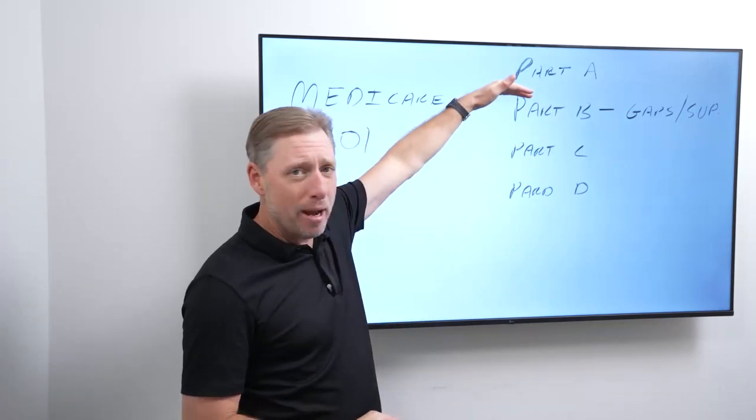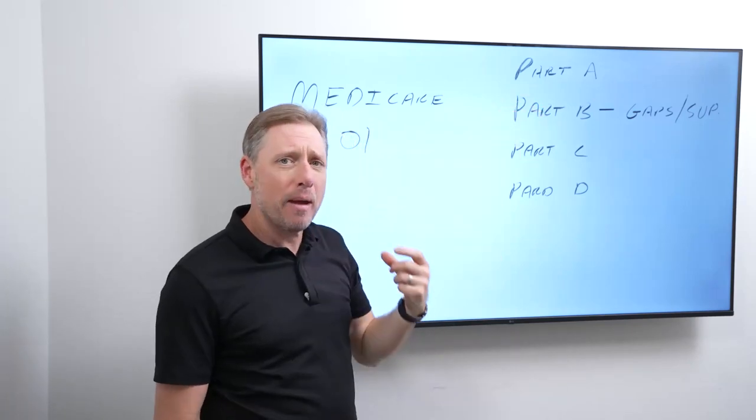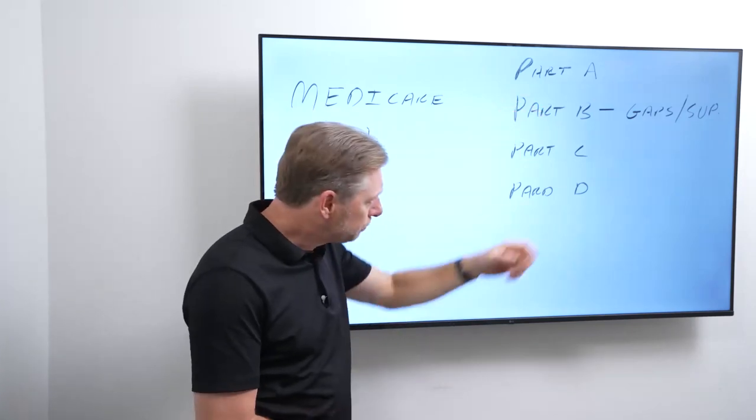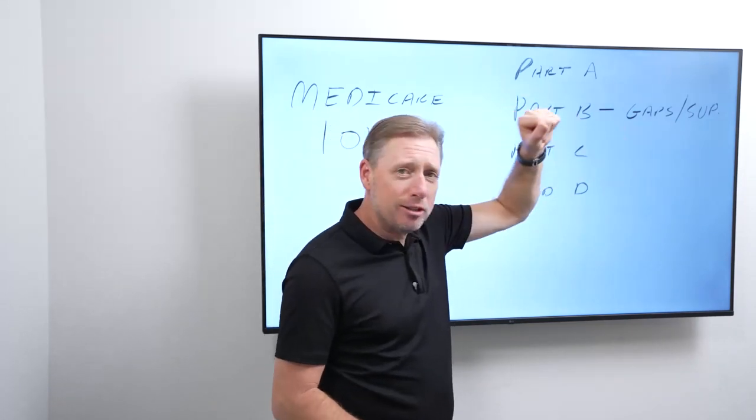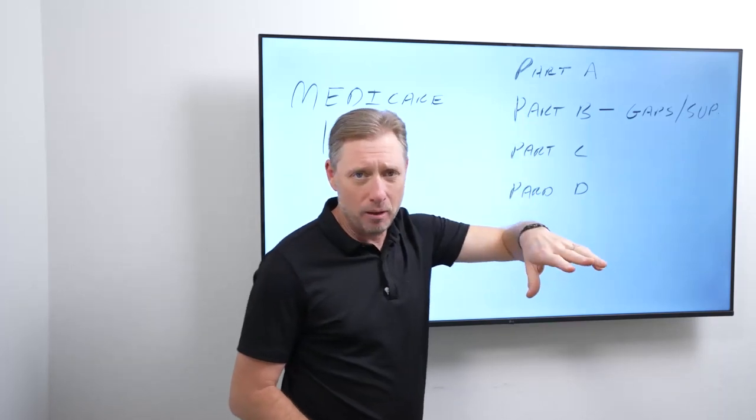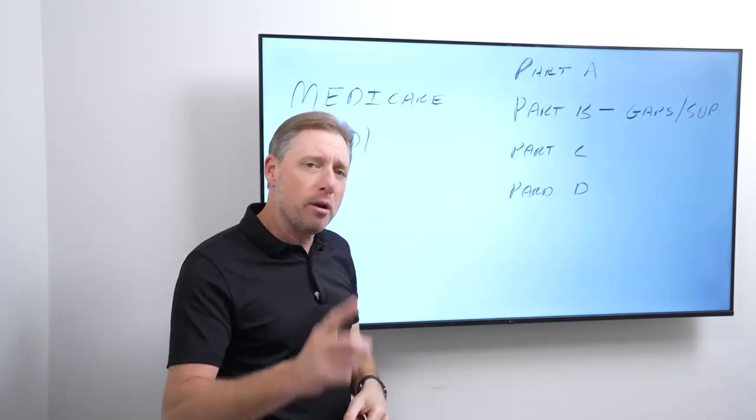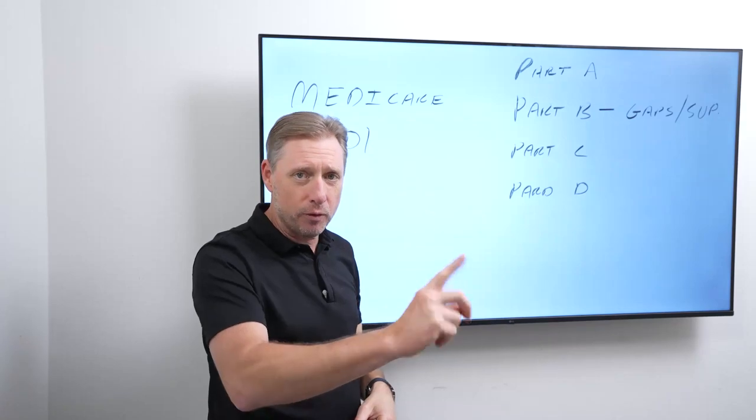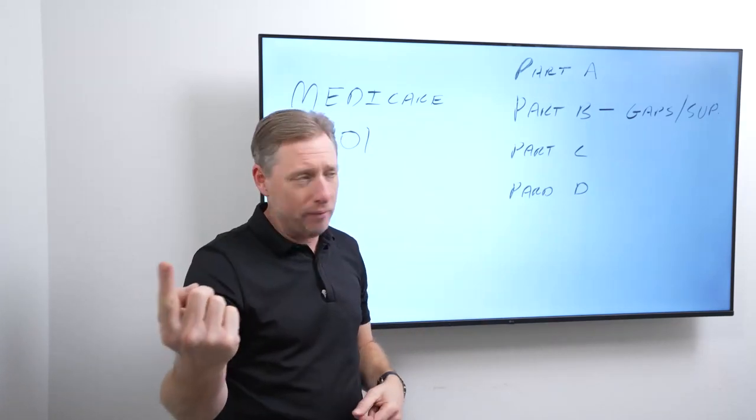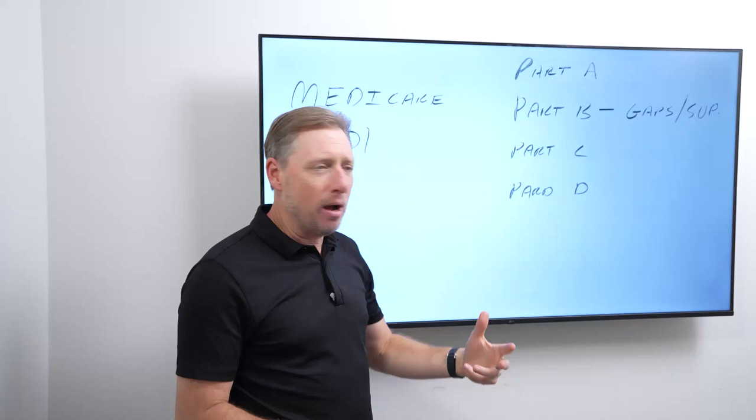So now go back to it. Part A, we don't pay for. Part B, we're paying about $165 a month for. For our Plan G supplemental policy, we're paying about $150 a month for. So now it's $315 for the husband and another $315 for the spouse or wife. So now we're at $630 a month.